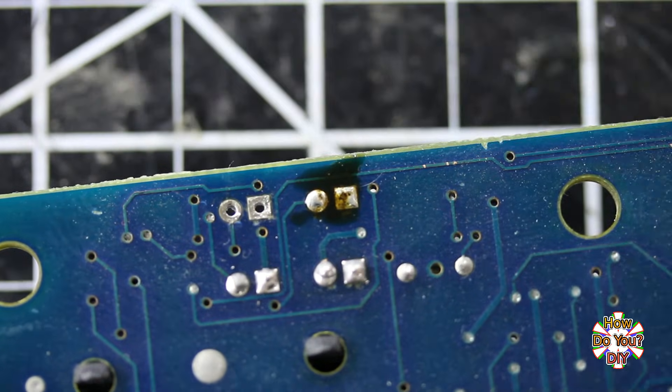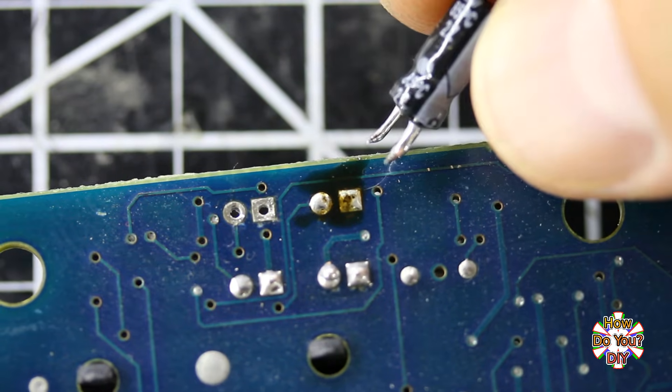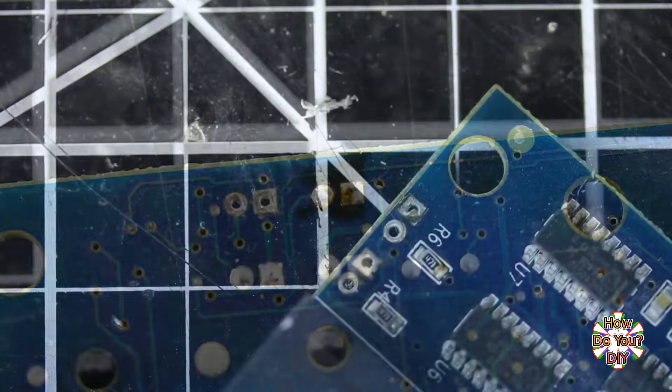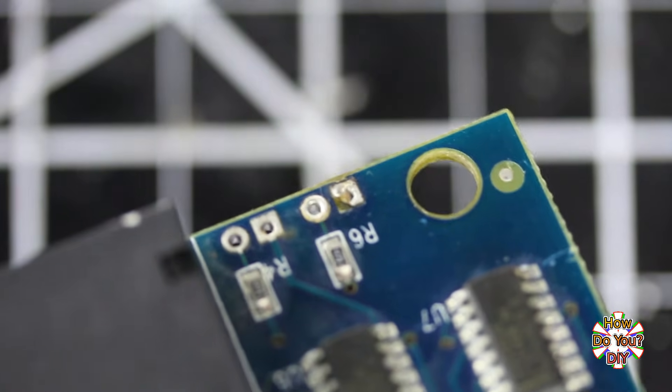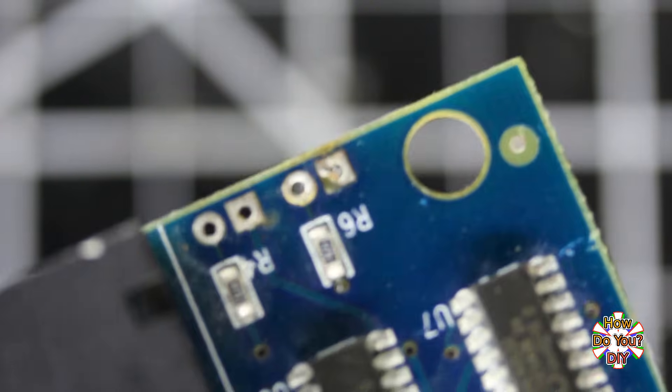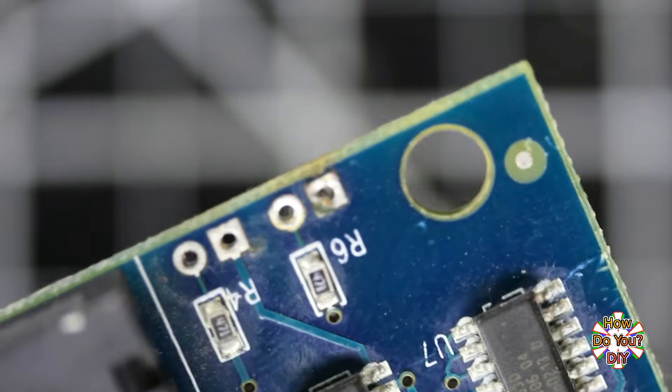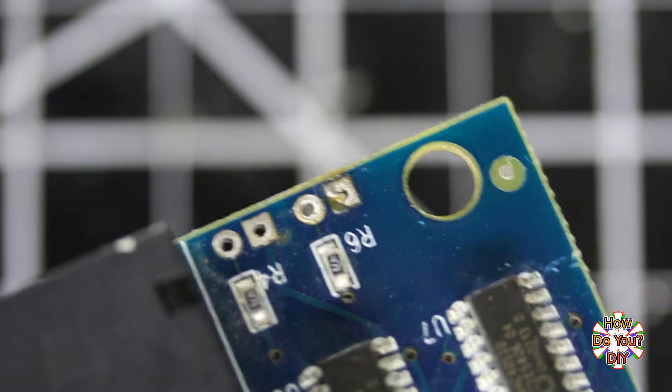And finally, I need to discuss possible damage that could result if you're not careful. The copper pads that the parts are soldered to may pull off of the board. This can happen if too much heat is applied, if heat is applied for too long, or if the part is pulled off while the solder is still holding it.